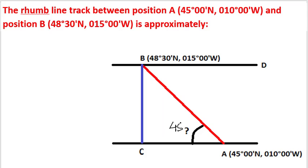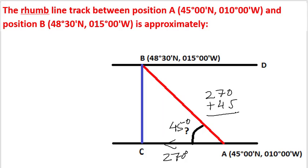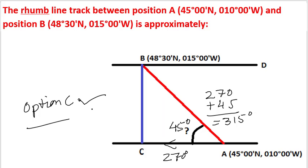We got angle BAC as 45 degrees. We know the direction of A to C was 270 degrees. Since B is 45 degrees clockwise from line AC, the direction of AB will be 270 plus 45, equal to 315 degrees, which is option C. Option C is the correct answer.